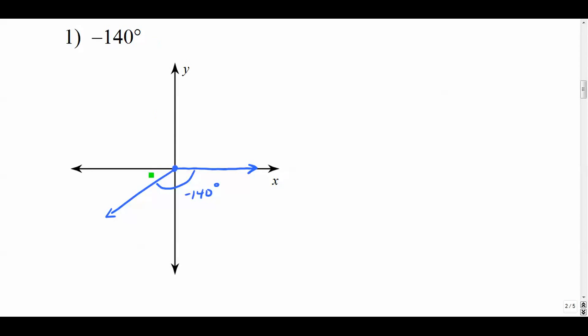In the next video we're going to talk about this reference angle idea, the fact that in this case the reference angle is going to be 40 degrees. It's the distance between the terminal side of an angle and the x-axis, but we'll save that for the next video. The main idea here is that it's a third quadrant angle.